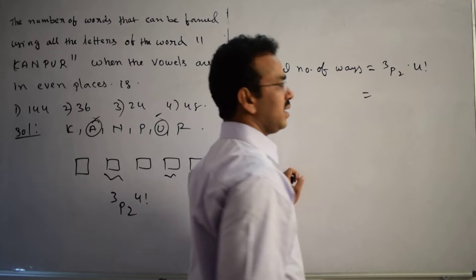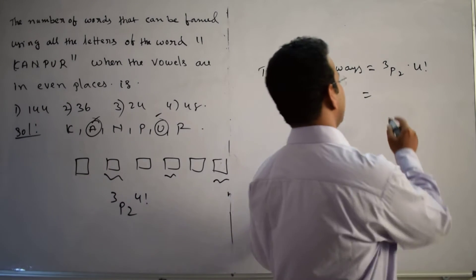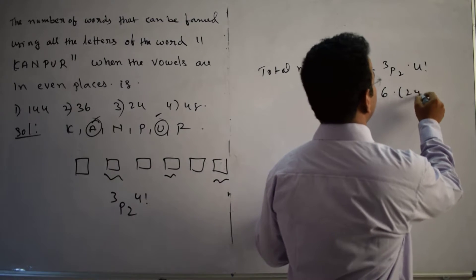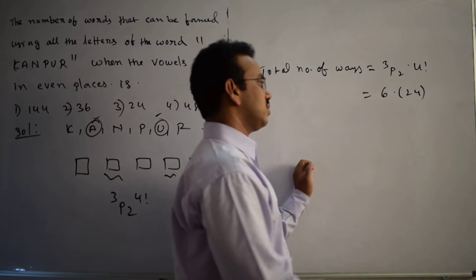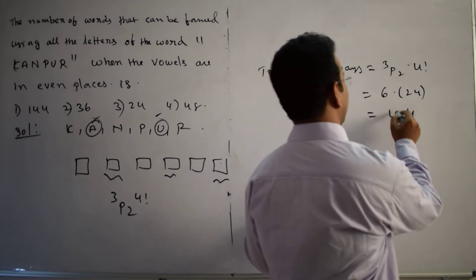Which is equal to 3 factorial by 3 minus 2 factorial. See here 3 factorial means 6 into 4 factorial. How much? 24. 6 into 24, how much here? 6 times 24 equals 144.